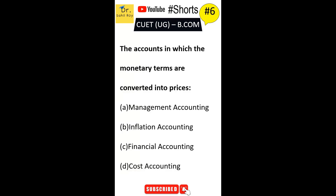The accounts in which monetary terms are converted into prices. First option is management accounting. Second option is inflation accounting. Third option is financial accounting. Fourth option is cost accounting. The correct answer is Option D, cost accounting — where monetary terms are converted into prices.